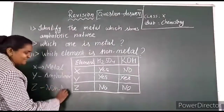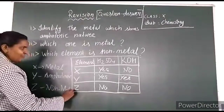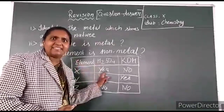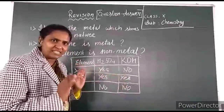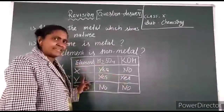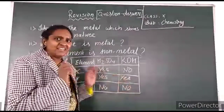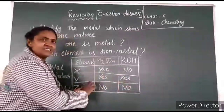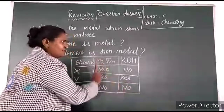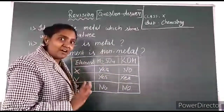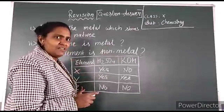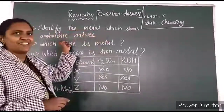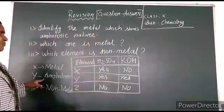Now you have an idea. Why is the first one a metal? Because most metals react with only acid — they don't react with the base. The second element reacts with acid as well as base, so the metal has amphoteric nature. The third element does not react with acid or base, so it is confirmed to be a non-metal. Now, identify the metal which shows amphoteric nature — that is Y.